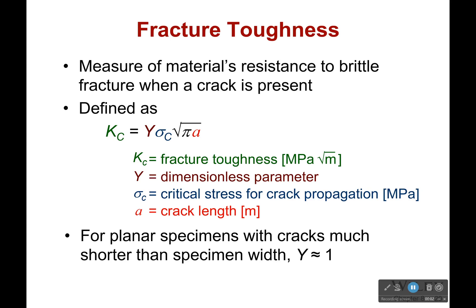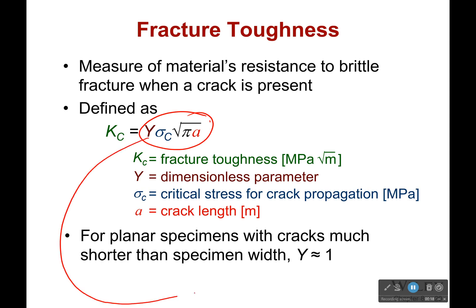Now let's talk about fracture toughness. What is it? Well, it's simply the measurement of a material's resistance to brittle fracture when a crack is present. And it's defined by the following. Note that Y for many specimens is going to be 1, so if it's not given to you and you're not solving for it, just assume it's 1.